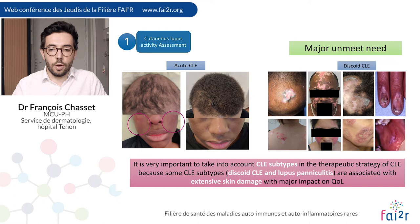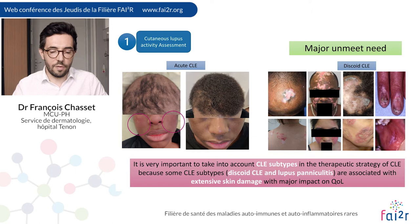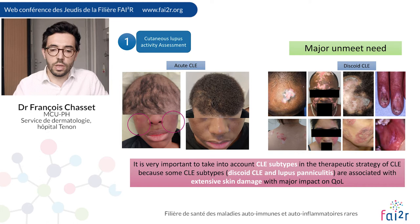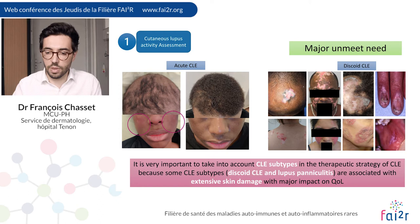A major point to maintain is that it is very important to consider the subtype when you want to treat a patient with CLE. In the left part of the screen you have a young patient with acute CLE with non-scarring alopecia, and as you can see, several months after, the erythema is resolved and there is no scarring. But on the right part of the screen you have a very severe discoid lupus erythematosus associated with high scarring rates and extensive skin damage, which may have a major impact on quality of life, and therefore this subtype may need more aggressive treatments.